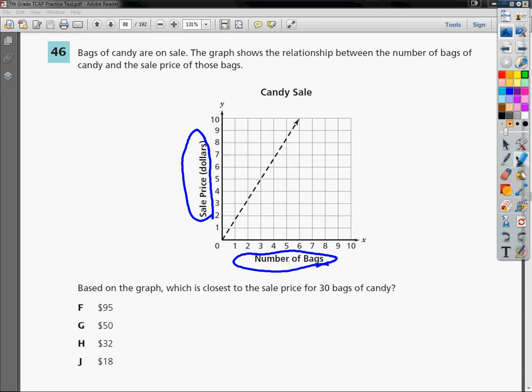The nice thing about the graph is that it's a straight line. If it's not a straight line, it gets a little weird, because you can't say that each bag costs the same amount. But as long as you have a straight line, it means that your slope is the same.